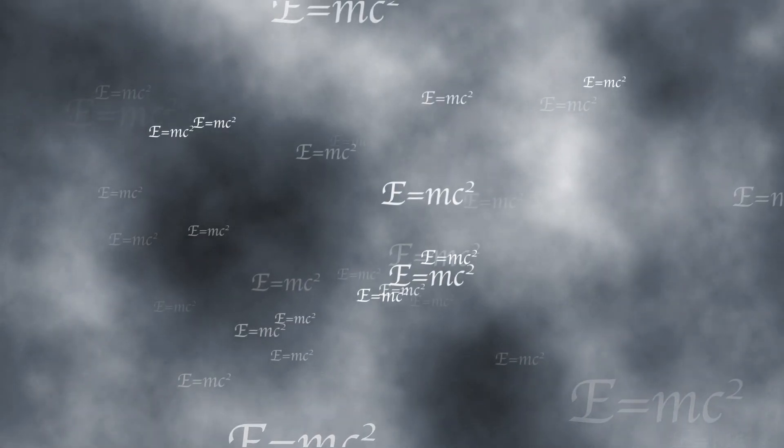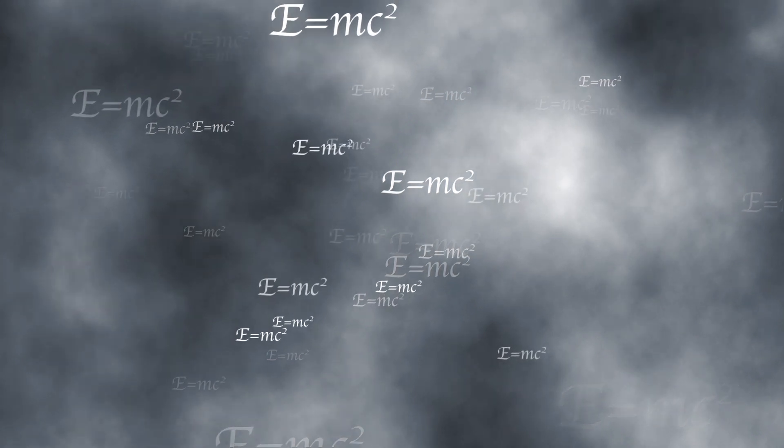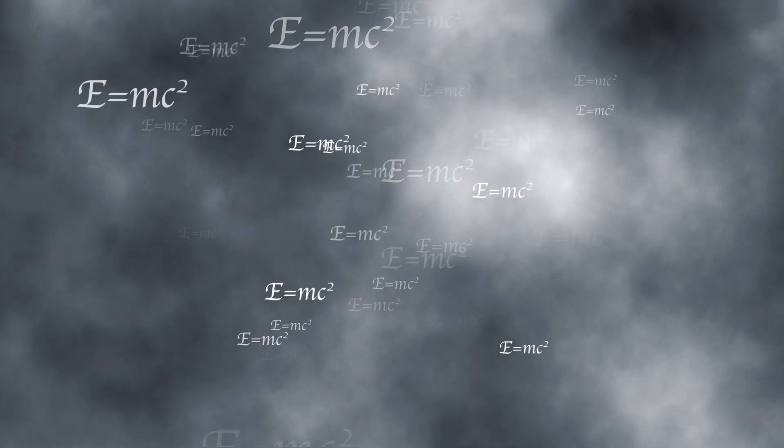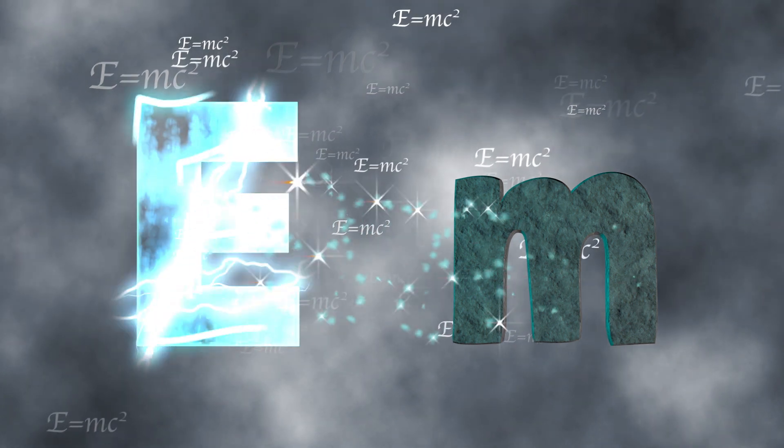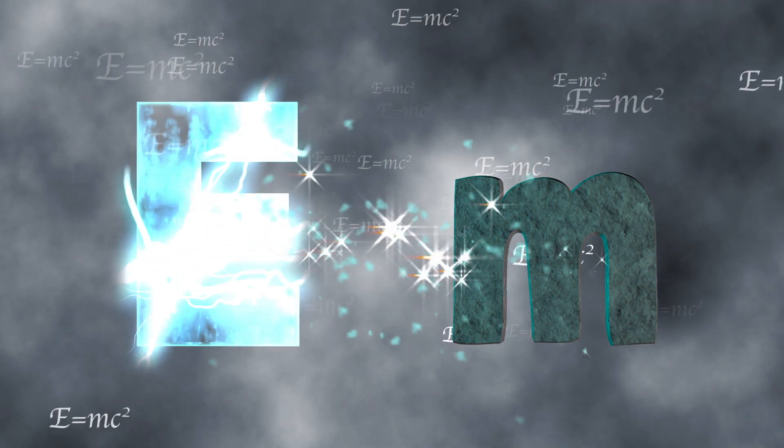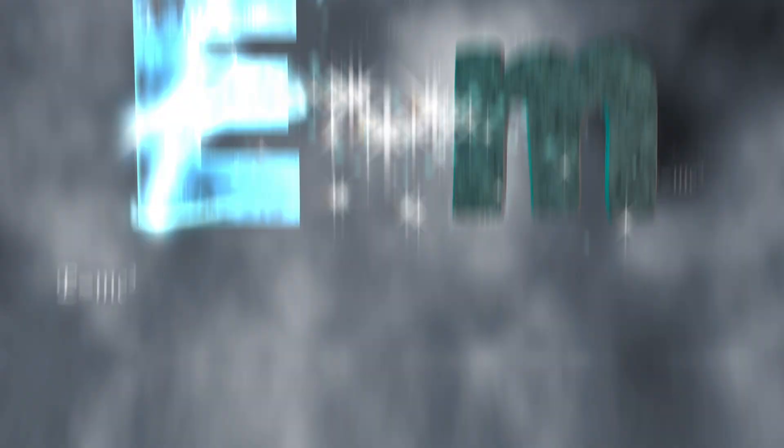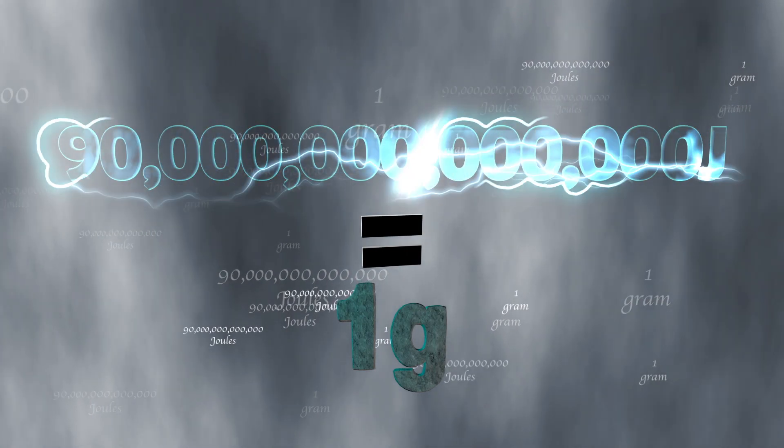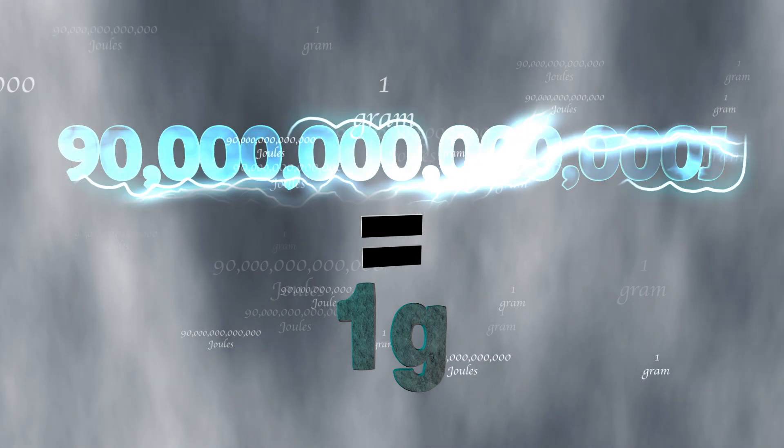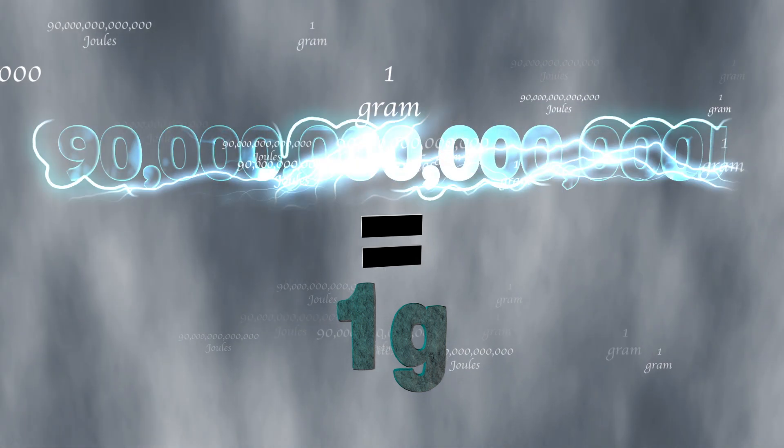Let's start with the most famous physics formula ever, E equals mc squared. It basically says that mass is concentrated energy and mass and energy are exchangeable. Like two currencies with a huge exchange rate, 90 trillion joules of energy are equivalent to one gram of mass. But how do I actually transform energy into matter?